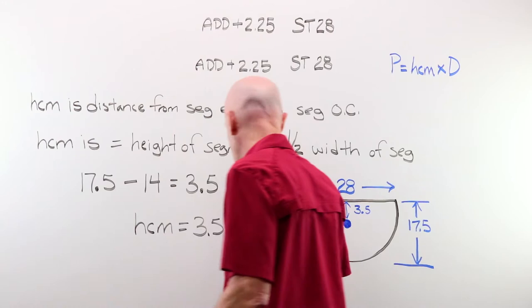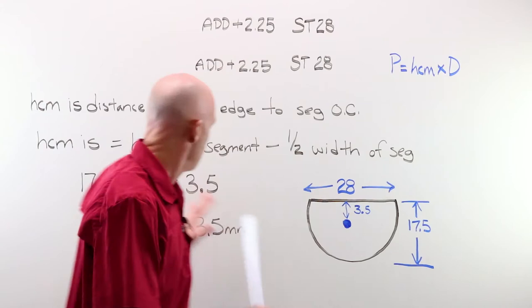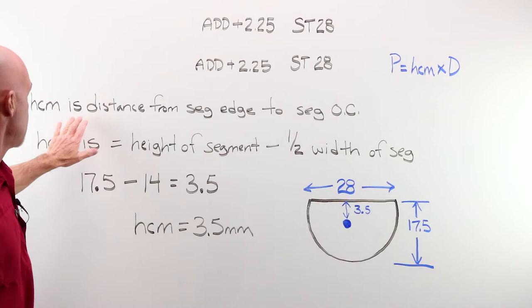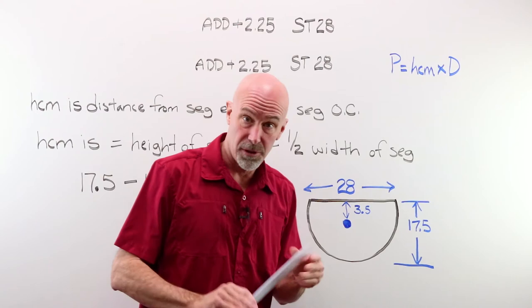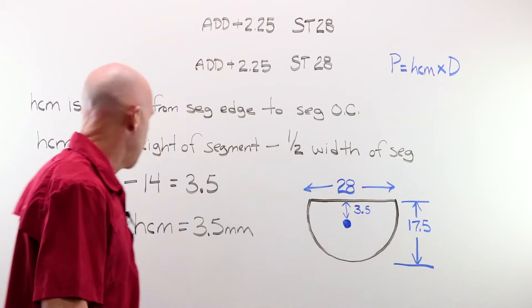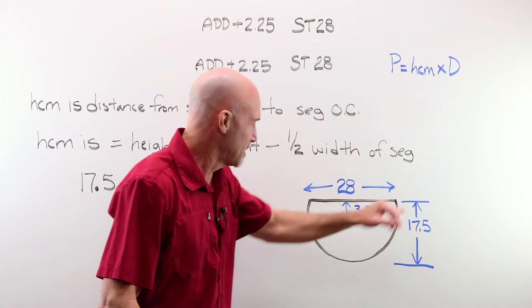We do need that add and we know we're working with a Straight Top 28. We are working Prentice's formula problem, P is equal to HCM times D. All we're going to do right now is figure out HCM, the distance moved. HCM is the distance from the segment edge to the segment OC. From the edge to the OC, to determine that we can use a formula. The answer is 3.5 and it will always be 3.5.